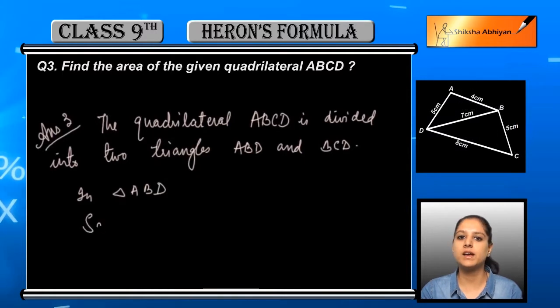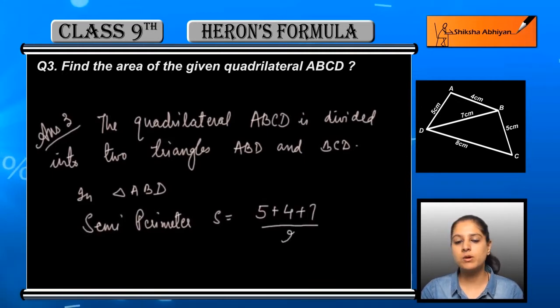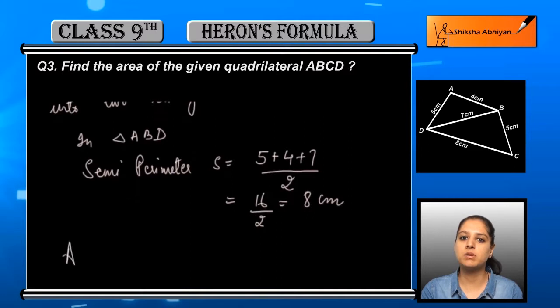First, for triangle ABD, you know to apply Heron's formula, the first step is to find the semi-perimeter. To find the semi-perimeter of triangle ABD, we add the three sides, that is 5 plus 4 plus 7, then divide by 2, so we get 8 centimeters as the semi-perimeter of this triangle.